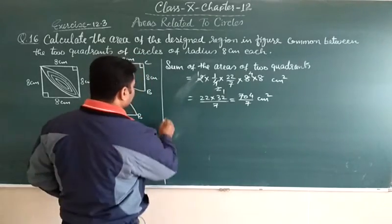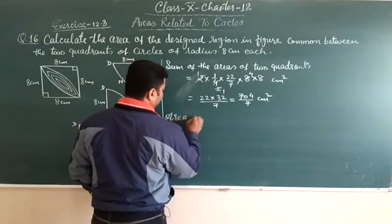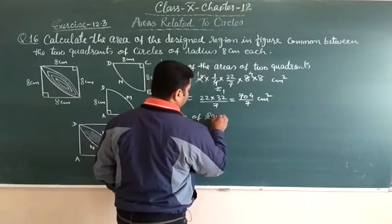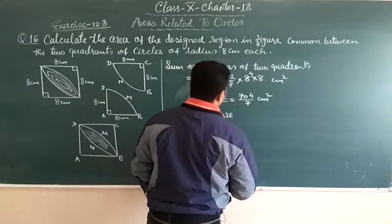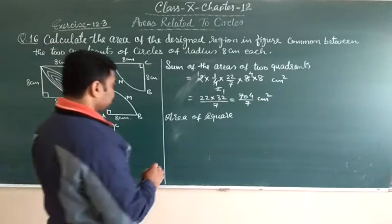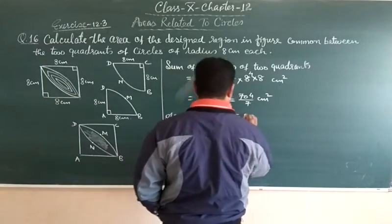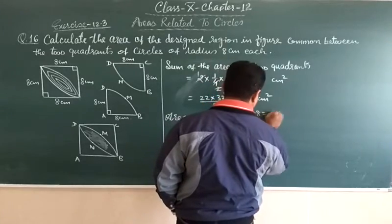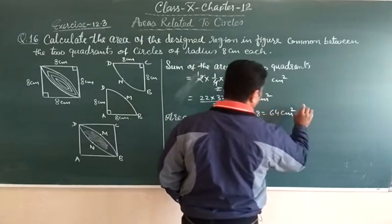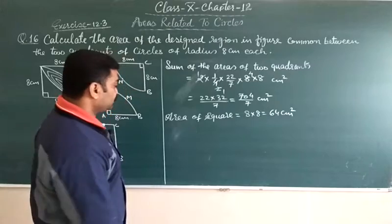Now, area of square. Area of square, what is the area of square? Side into side, 8 into 8, that is 64 centimeter square.